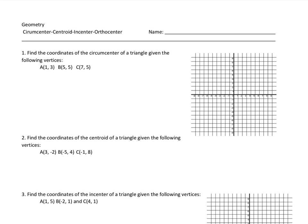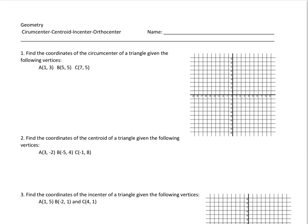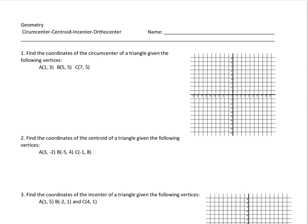We're going to plot these points. Point A is at (1, 3), point B is at (5, 5), and point C is at (7, 5). We can connect these to form the triangle that we need to find the circumcenter for.